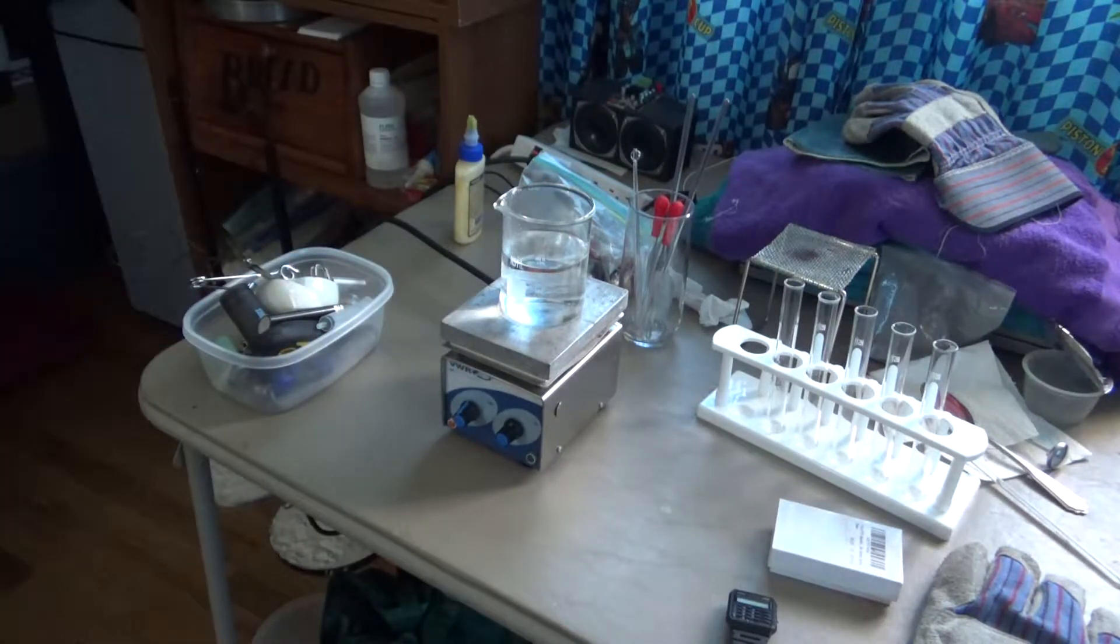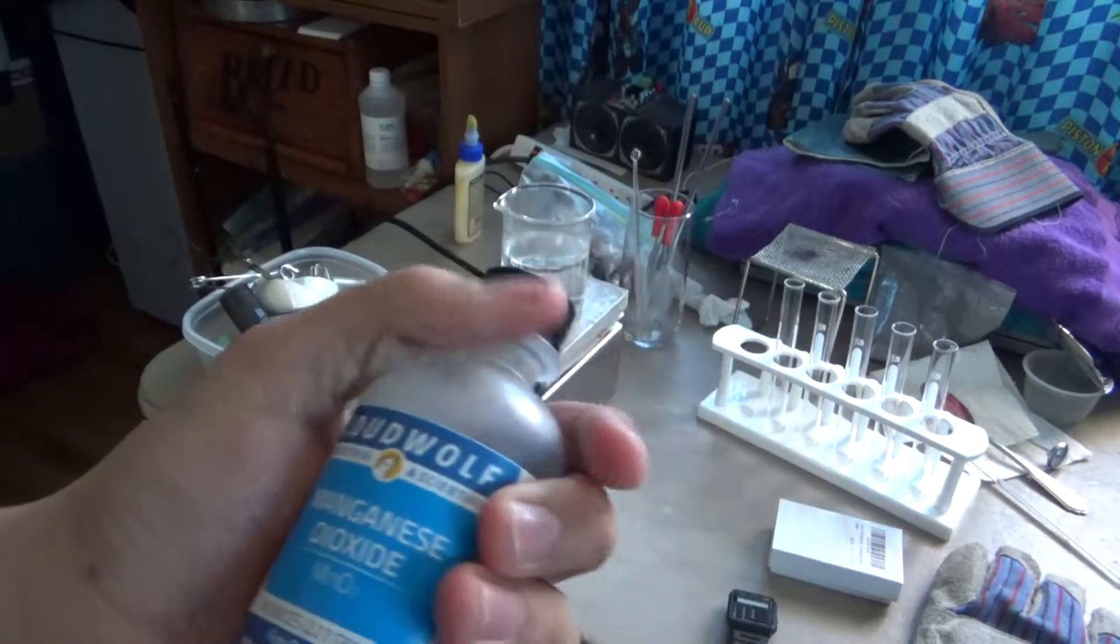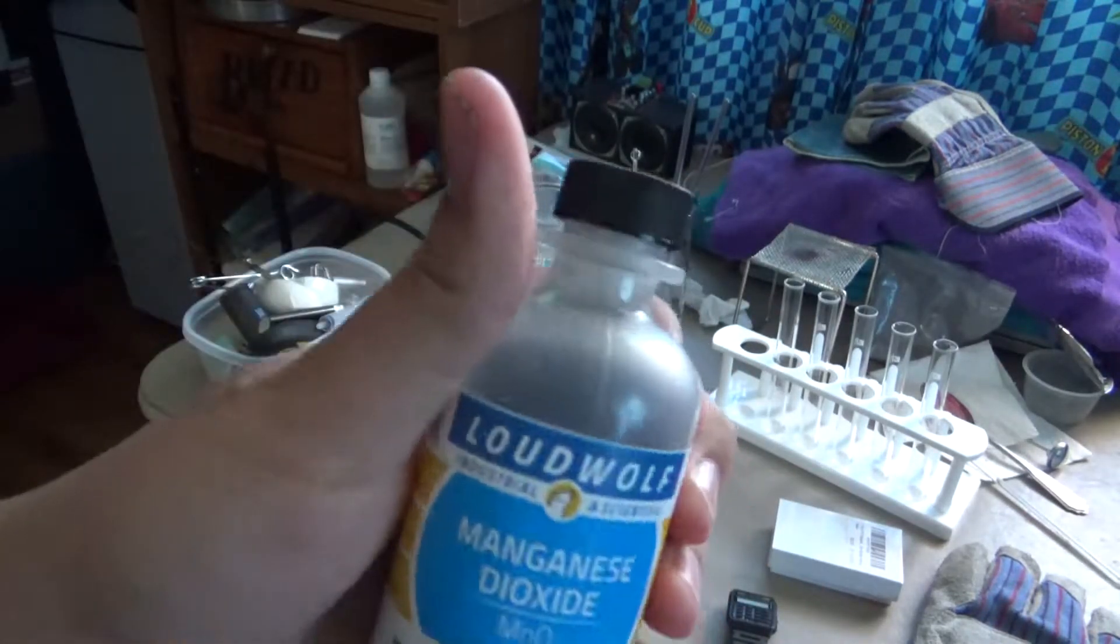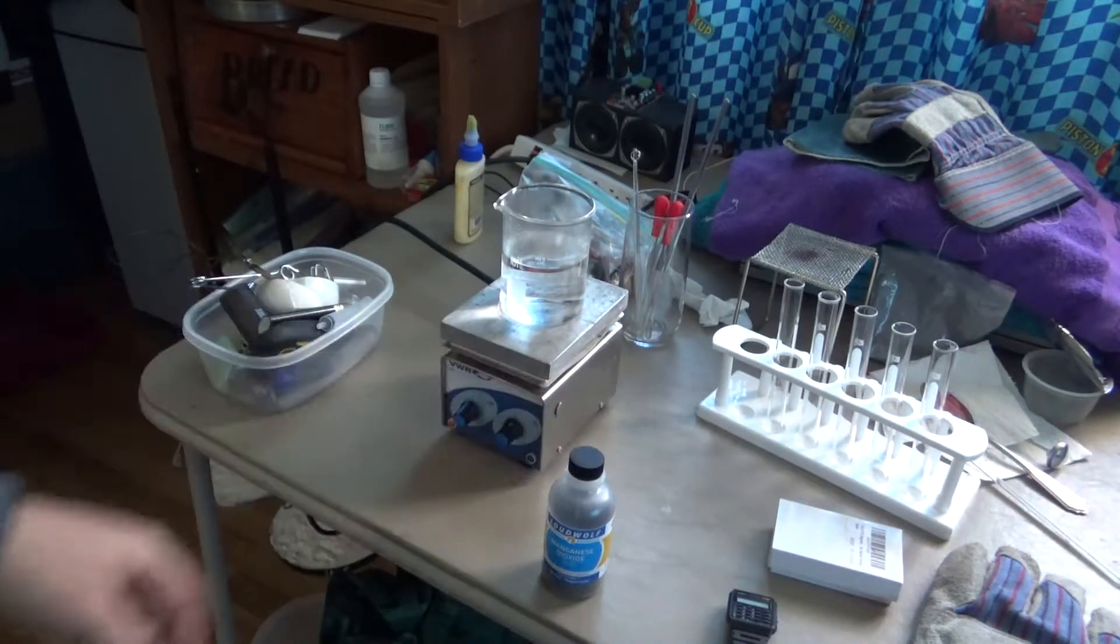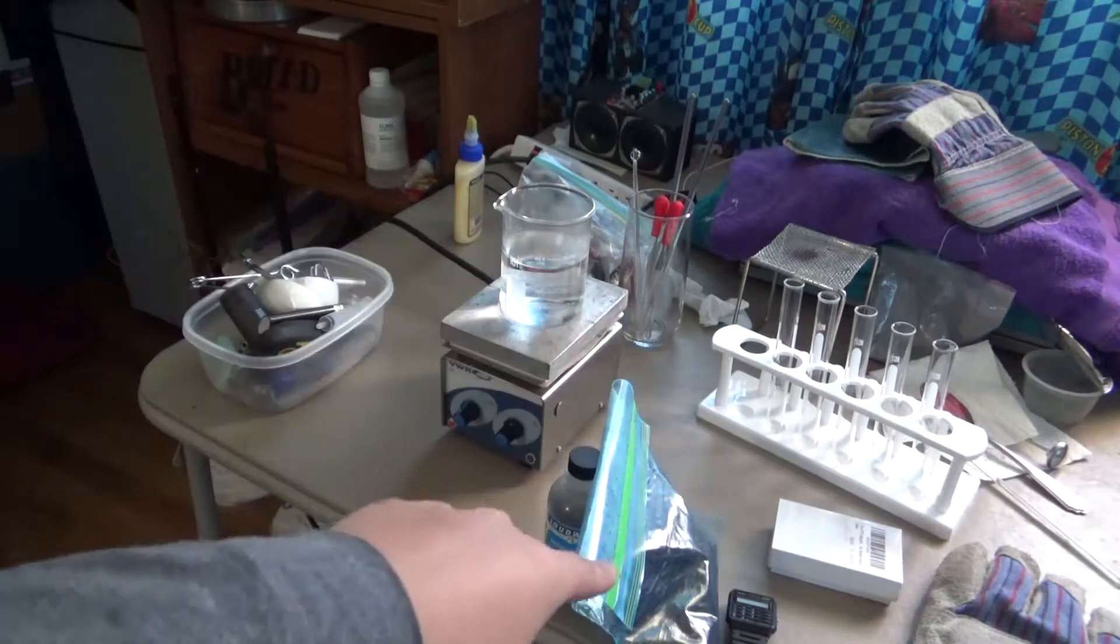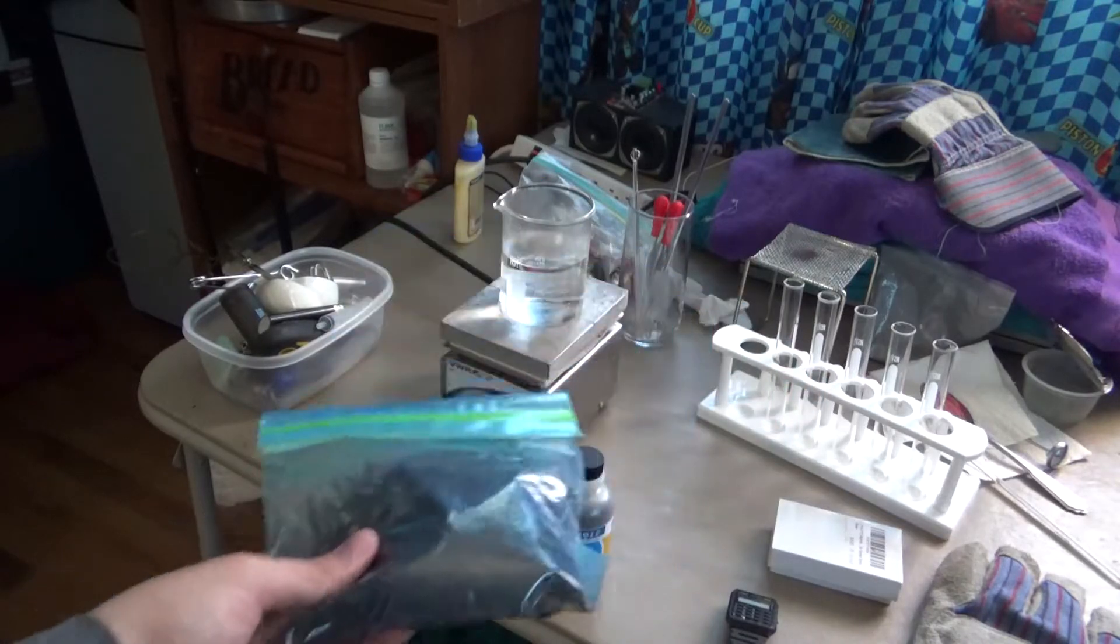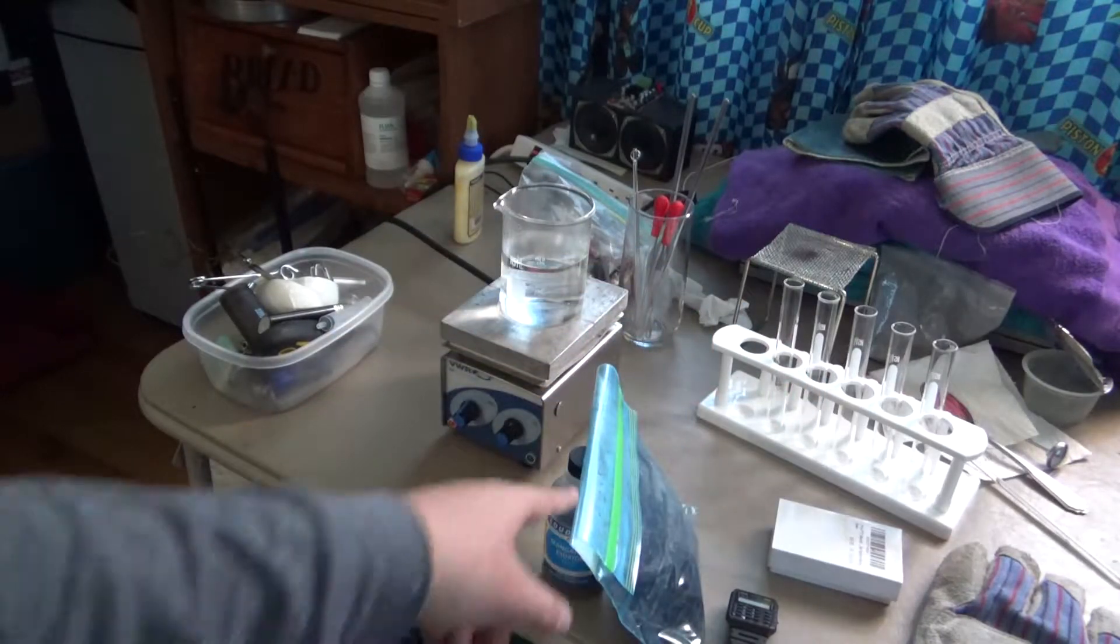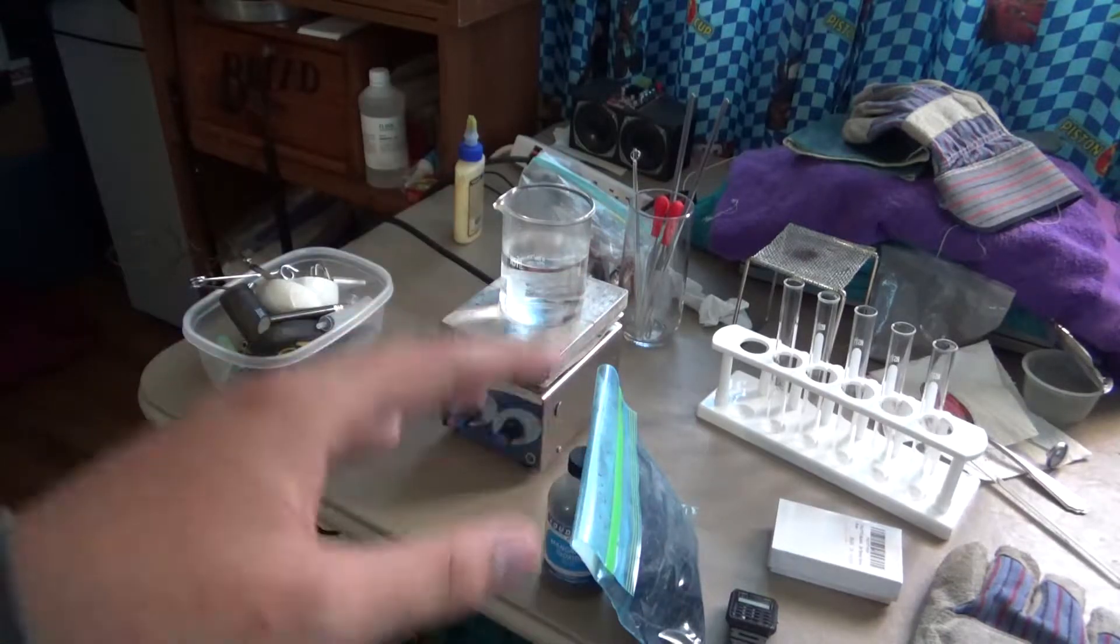I recently got my shipment of manganese dioxide from Loud Wolf, a great chemical supplier. That is one catalyst I want to try today. Another catalyst is charcoal. Apparently charcoal does some decomposition of hydrogen peroxide. And I also want to test potassium iodide.